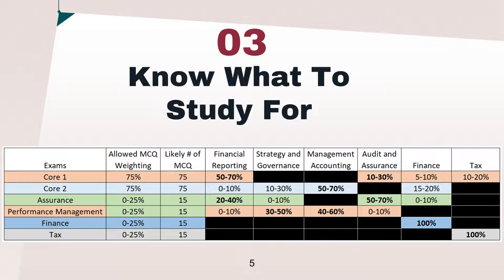The next tip is to know what to study for. If you're taking Core 1, most likely you want to spend all your time in financial reporting and audit and assurance. If you're in Core 2, then you should spend your time in managerial accounting topics. If you're in Assurance, most likely you want to spend time in financial reporting and audit and assurance.